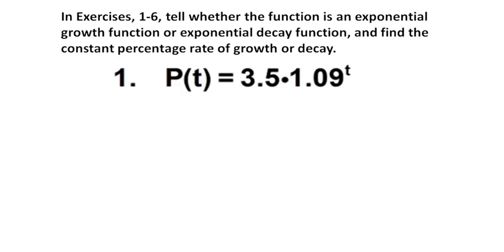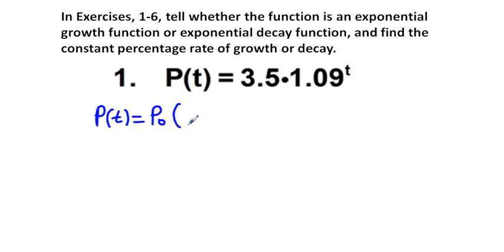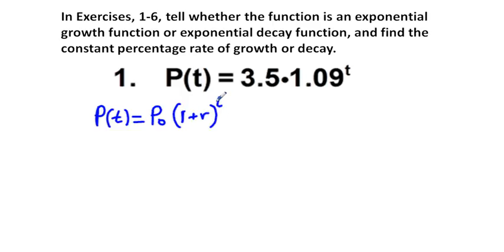We need to understand what the basic population growth or decay function is. The function is basically P sub T equals P sub 0, which is our starting population, times the quantity 1 plus R to the power of T. We need to identify the parts of this basic formula.